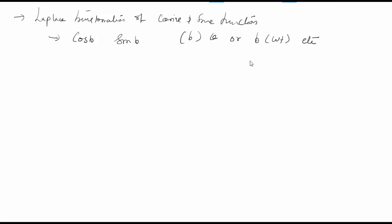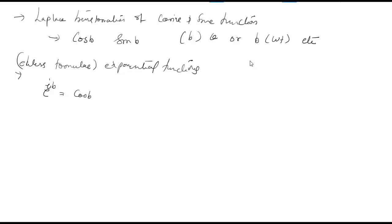To define this, I will use Euler's formula for the exponential function, which states that e raised to i·b is equal to cos(b) plus i·sin(b).